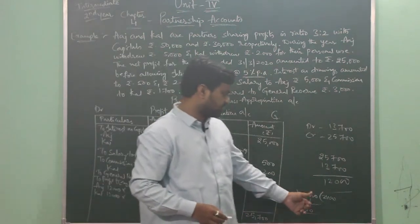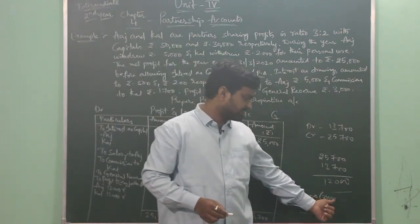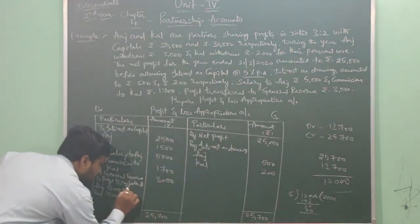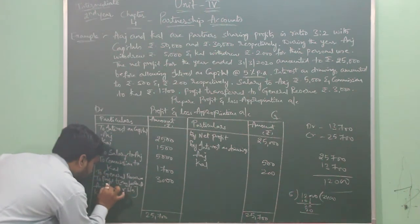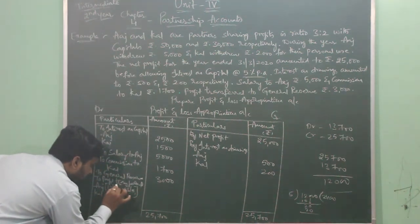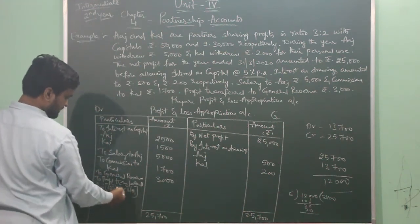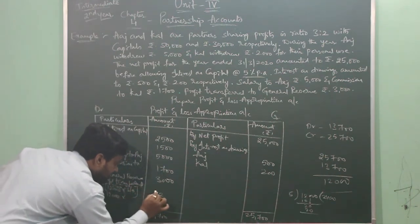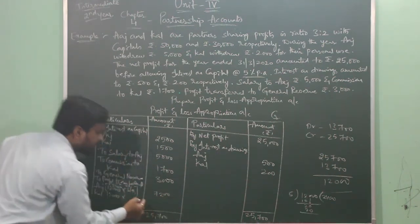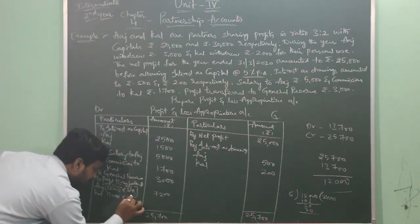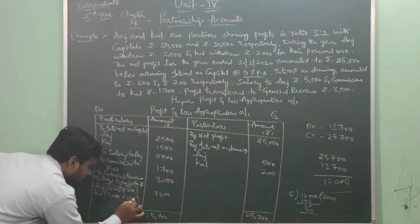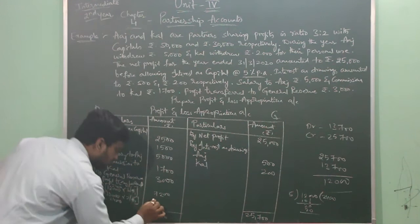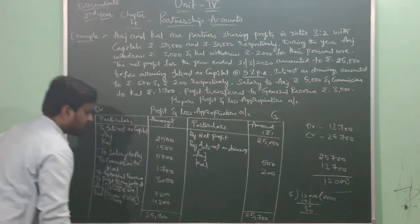Each share is worth 2,400. Aaj gets 3 shares: 12,000 × 3/5 = 7,200 rupees. Kull gets 2 shares: 12,000 × 2/5 = 4,800 rupees. So Aaj's share of profit is rupees 7,200 and Kull's share of profit is rupees 4,800.